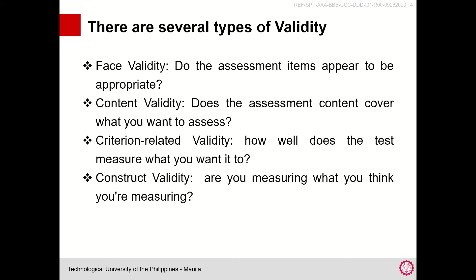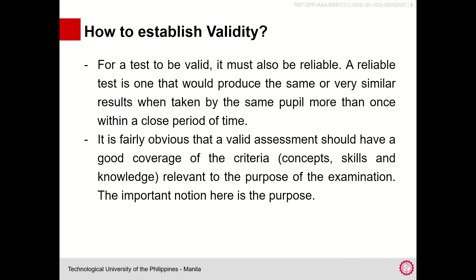Criterion-related validity concerns the quality and effectiveness of the measurement tool — does it measure what you really wanted to measure? The last type is construct validity: are you measuring what you think you're measuring? Do you think that your measurement tool measures the thing that you intend to measure?